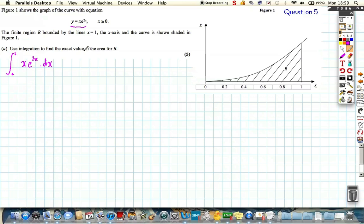The formula's on your formula sheet. The integration by parts formula goes like this: the integral between u dv dx with respect to x, that's the two parts of our product, is equal to uv minus the integral of v du dx with respect to x.